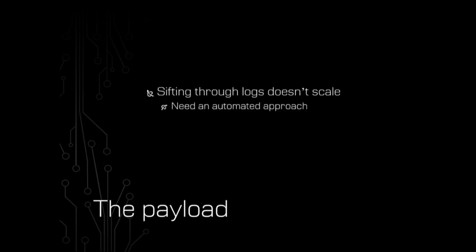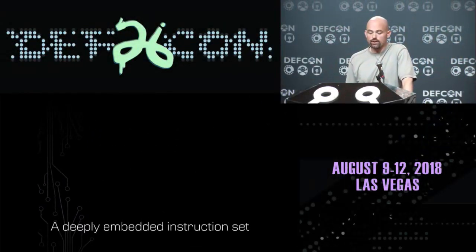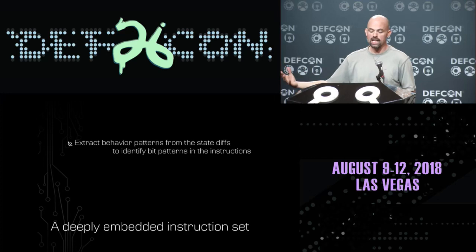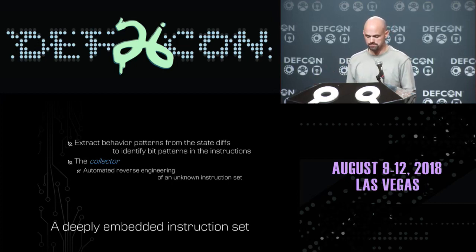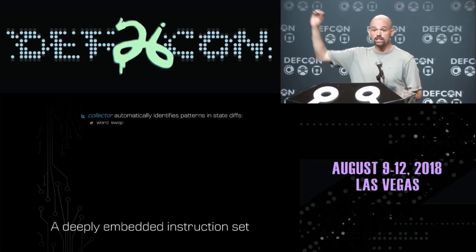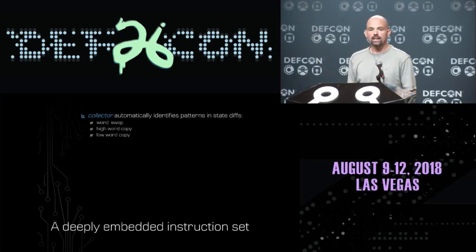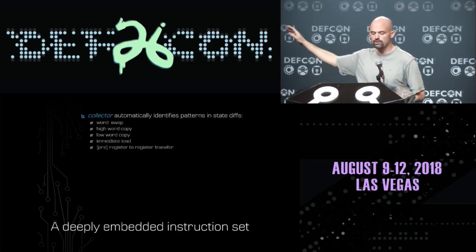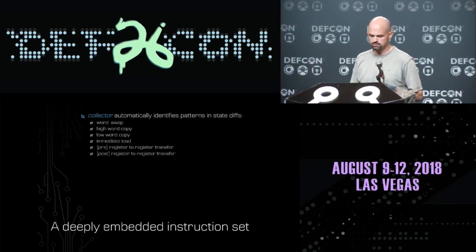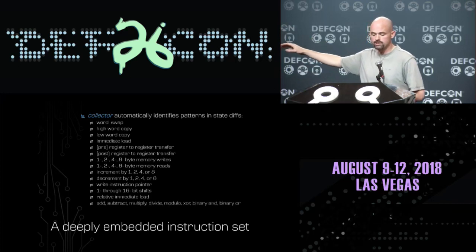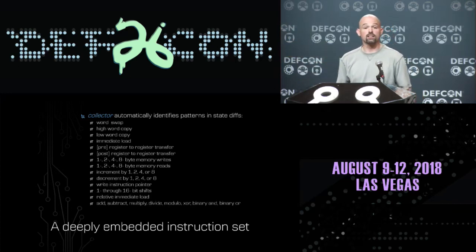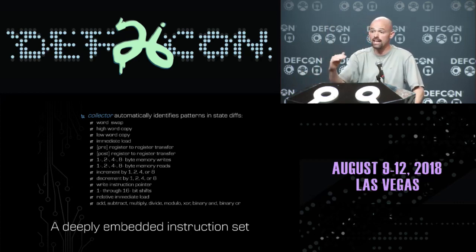But I decided that sifting through logs like this by hand just doesn't scale. I want to be able to write more robust payloads for this deeply embedded core, so I wanted some automated approach. I built a tool called 'the Collector,' which helped us do automated reverse engineering of completely unknown instruction sets. The Collector looks at those state diffs recorded by the fuzzer and tries to identify basic operations like loading immediate values into registers, transferring one register to another, reading memory, modifying memory, shifting registers, and any number of arithmetic and bitwise instructions.